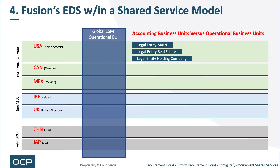Now, Fusion's Enterprise Data Structure within a shared service model. Legal entities main, real estate, and even one called holding entity are legal entities within a business unit, as business units in EDS and Fusion are often regional or country-based. The operational business unit on the top is an enterprise supply management function, which is operational — meaning it doesn't do accounting; it's a processing business unit to handle the shared service work. The accounting business units, or ABUs, are the actual countries: North America, Europe, and Asia are grouped — these are just examples.